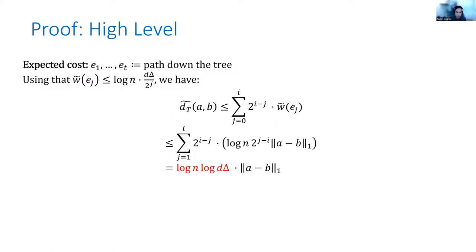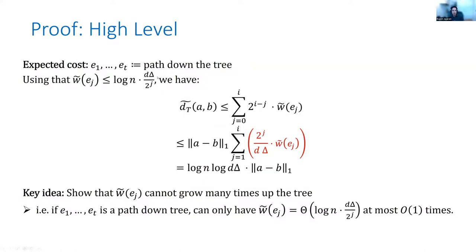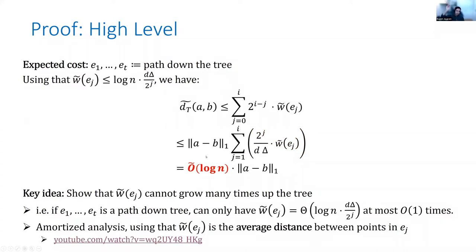Our improved approximation comes from showing that even though in the worst case the average-case distance can be a log n factor larger, on average over the entire path in the tree, no path can have an average-case distance a log n factor larger many times. In particular, the average-case distance of an edge can only be a log n factor larger than it should be a constant number of times. We show a more amortized version of this: for any distribution of points, the total excess weight across the whole tree is only a log n factor overall. This amortized analysis crucially uses the fact that the weight is an average-case weight over all points going through an edge. A longer talk going into further depth is available for reference.